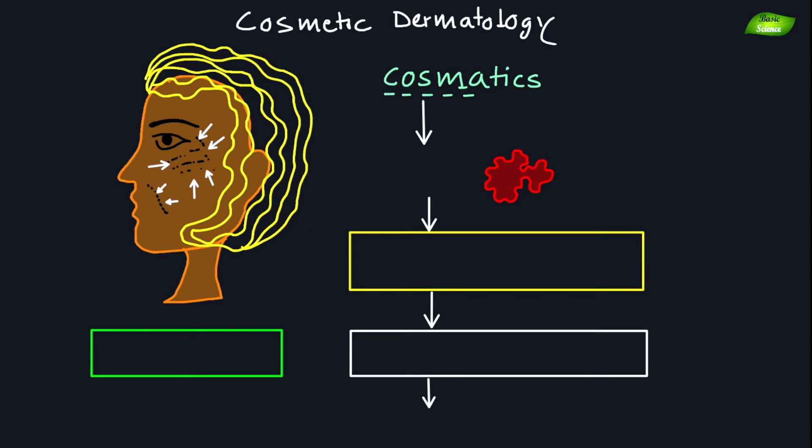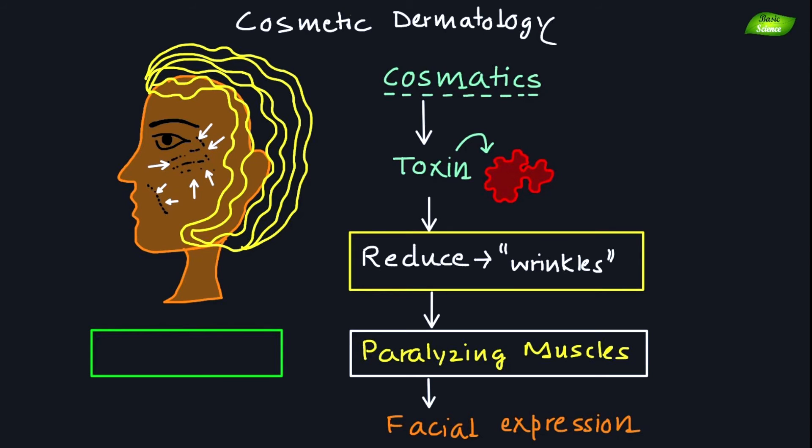In cosmetic dermatology, botulinum toxin is commonly used to reduce the appearance of facial wrinkles and fine lines by selectively paralyzing the muscles responsible for dynamic facial expressions. By relaxing these muscles, botulinum toxin can smooth out wrinkles and give the skin a more youthful appearance.